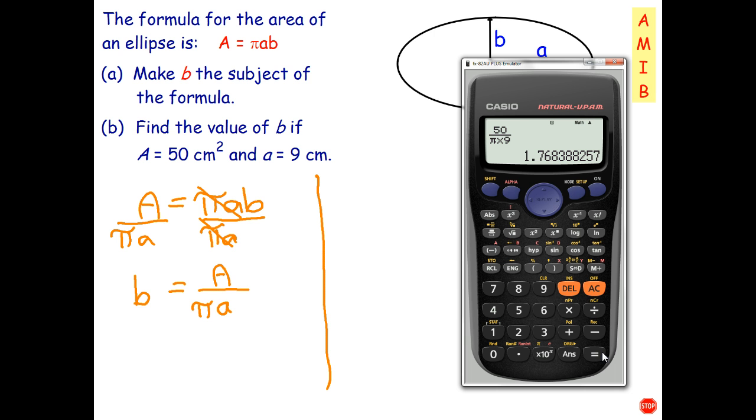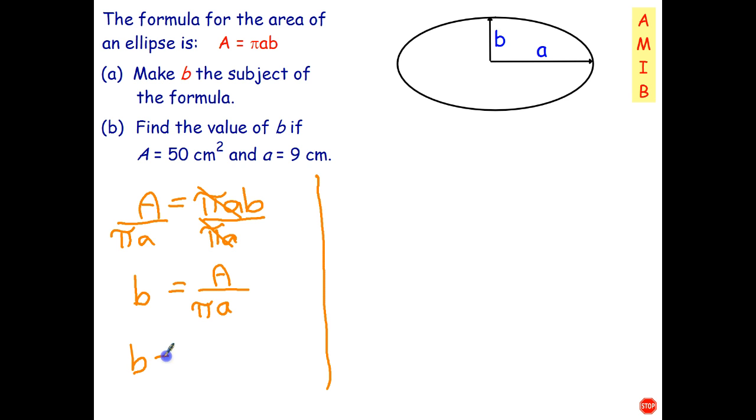And we need to round that to probably two decimal places so 1.7 and that's six rounds up to a seven. So 1.77 centimeters.